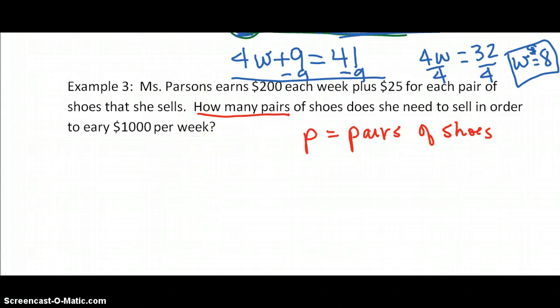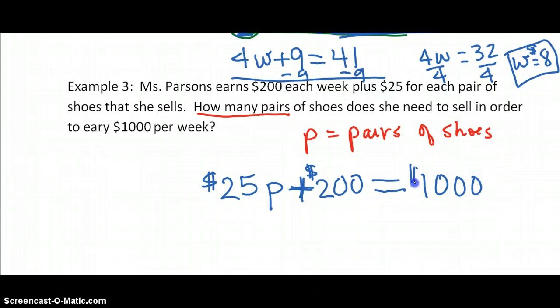Let me read my sentence again so I can make sense of it. She earns $200 each week. Sounds like no matter if she sells or doesn't sell, she's going to make $200 plus, I heard that word, plus $25 for each pair. So every time she sells a pair, which is what we're looking for, she earns $25. This is all dollars, and we want our salary or her earnings to be $1,000 per week.